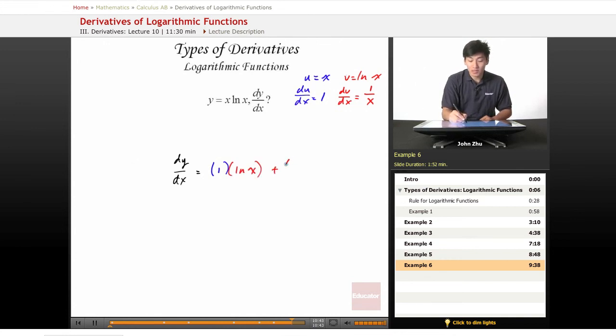plus derivative of the second term, 1 over x, times the first term. And we see that this simplifies down to ln of x plus 1, or x over x.